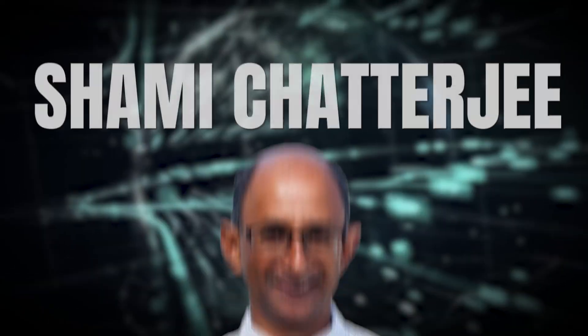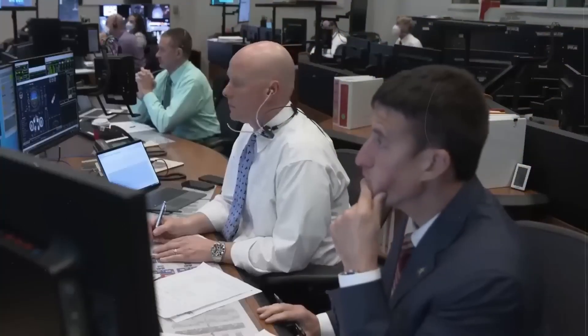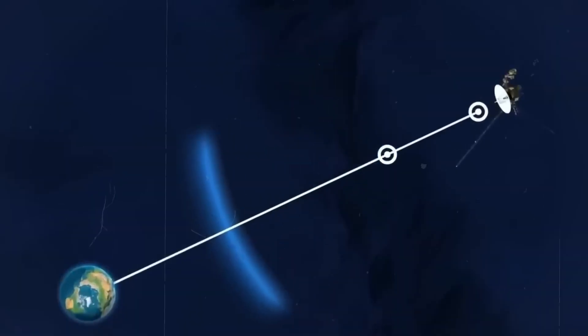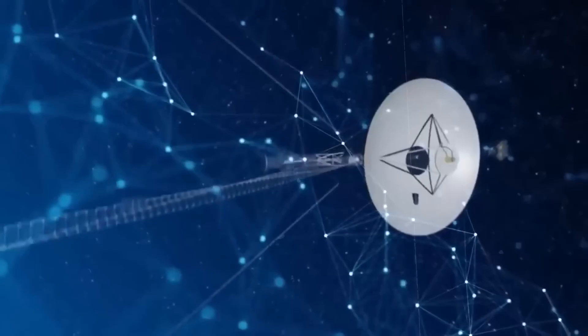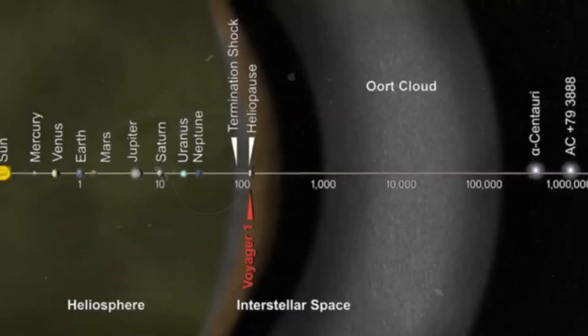Cornell researcher Shami Katerji explained, Now we know we don't need a fortuitous event related to the sun to measure interstellar plasma. Voyager is sending back details. The craft is saying, Here's the density I'm swimming through right now. This represents a fundamental shift in space exploration.